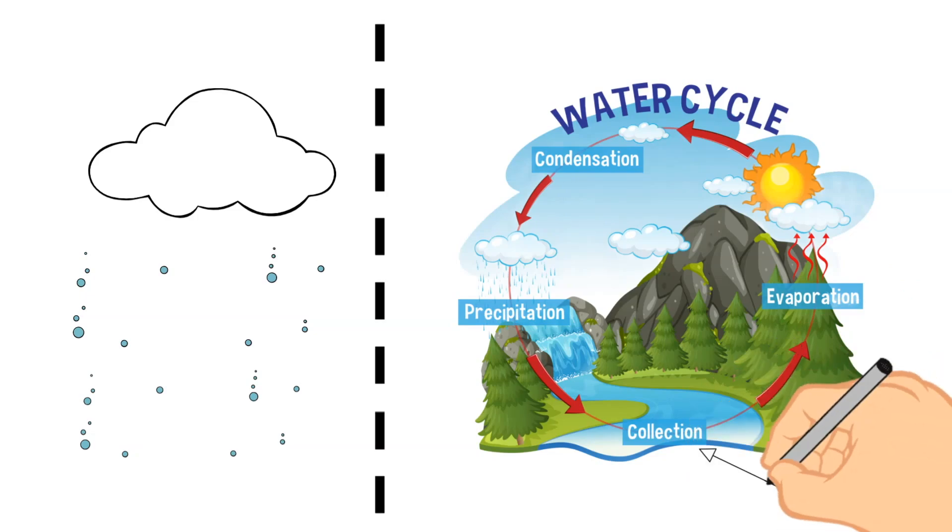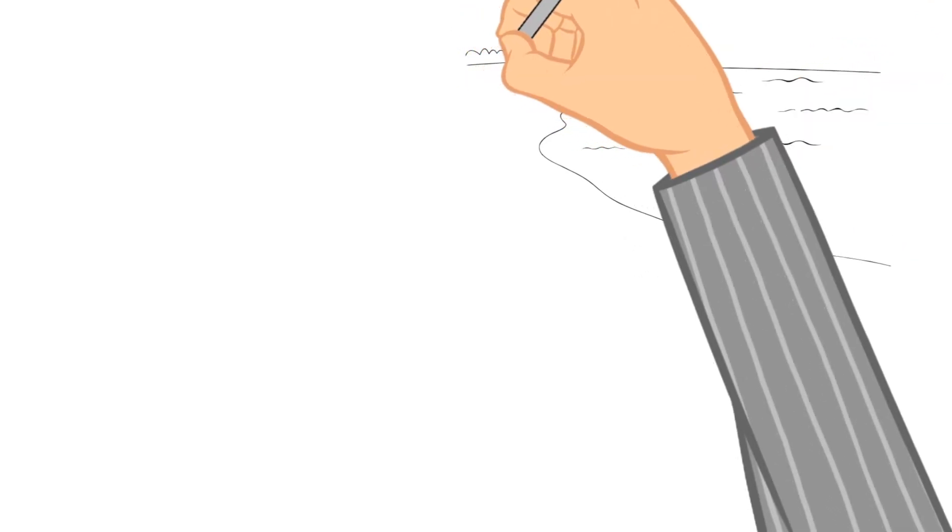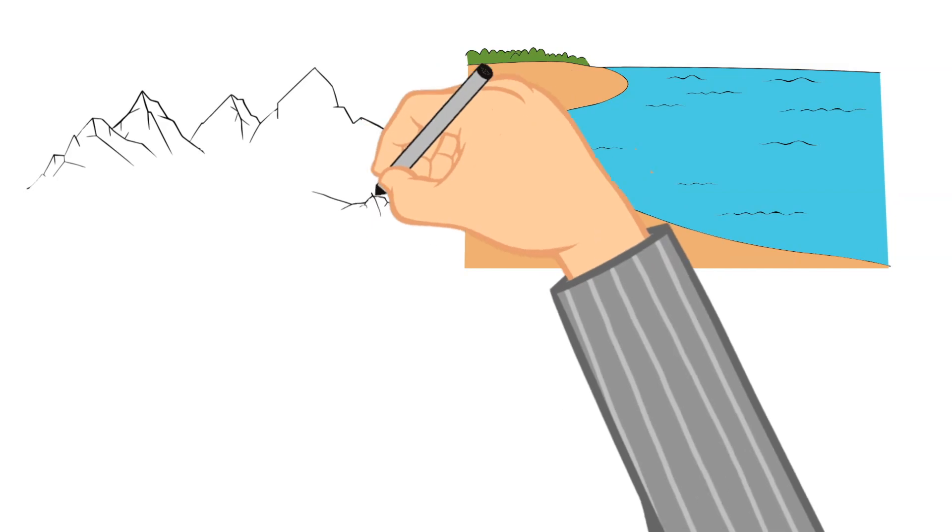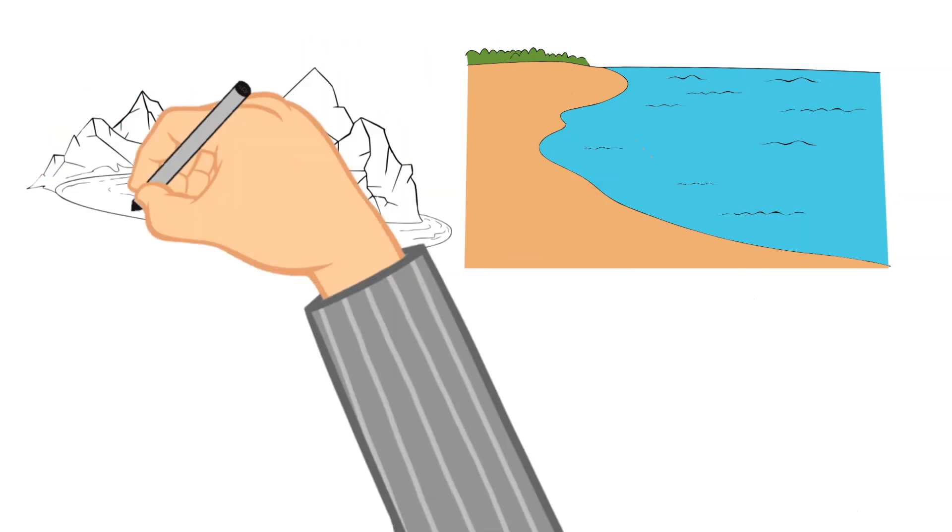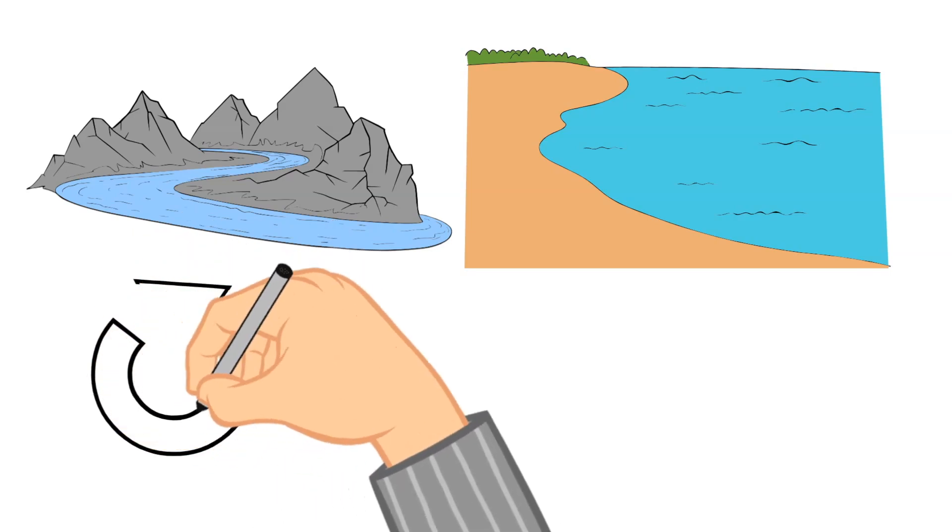Now let's jump over to the collection part of the water cycle. This falling precipitation is then collected back into the bodies of water, such as rivers and oceans, and then the water cycle starts all over again.